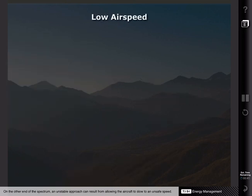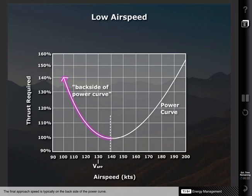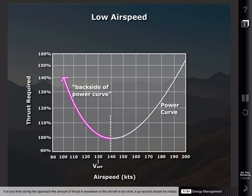On the other end of the spectrum, an unstable approach can result from allowing the aircraft to slow to an unsafe speed. This is known as operating on the backside of the power curve. On the backside of the power curve, the aircraft will continue to decelerate at a given power setting. The final approach speed is typically on the backside of the power curve. Below this speed, additional thrust will be required. This presents a problem during landing and can increase the risks of a hard landing or tail strike. If at any time during the approach the amount of thrust is excessive or the aircraft is too slow, a go-around should be initiated.